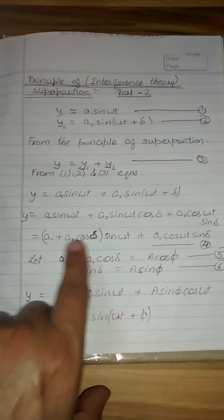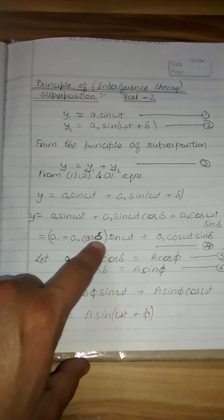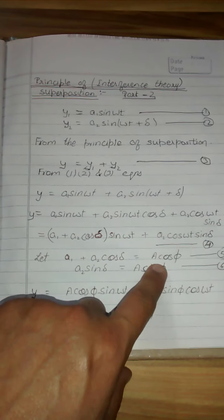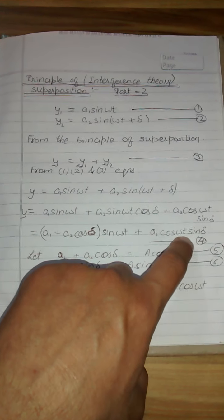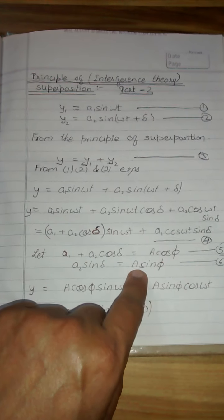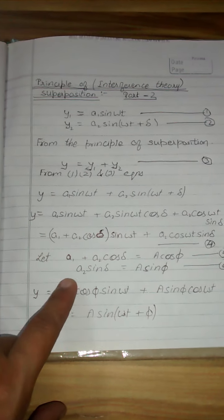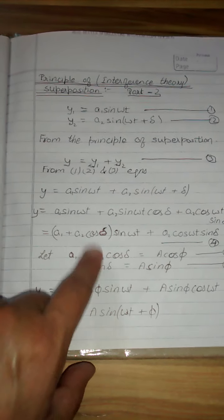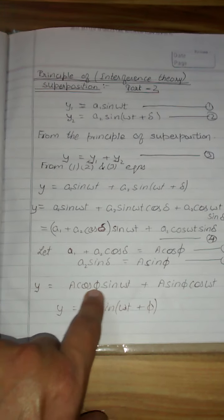We obtain this equation four. Now let us consider that this part is taken as A cos phi, and the remaining part, this one, we take as A sine phi. We are calculating here so that we can easily obtain the formula for the resulting y.